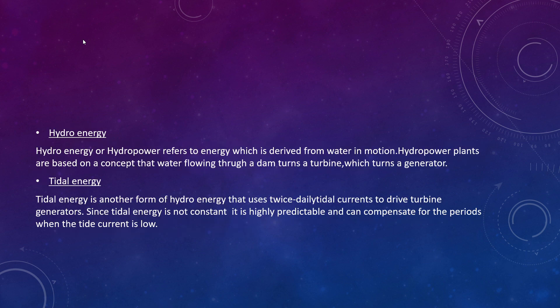Hydro energy: here the kinetic energy in the flowing water is converted into electric energy. Kinetic energy, as you have studied in physics, is the energy possessed by virtue of its motion. So falling or flowing water turns the turbines to produce electricity.